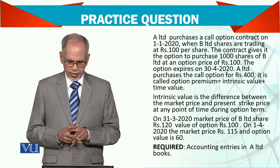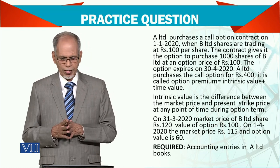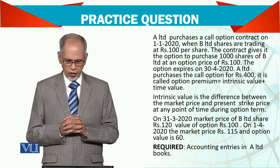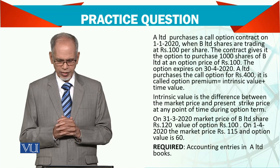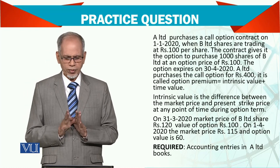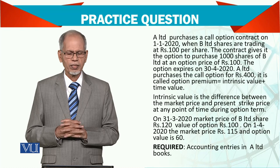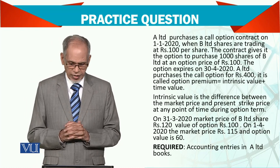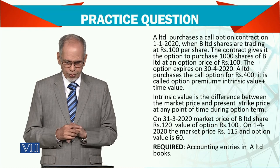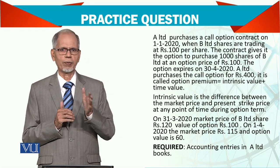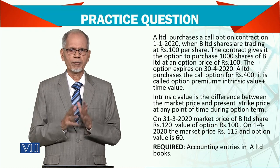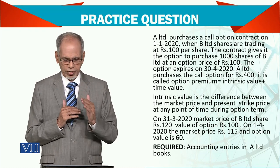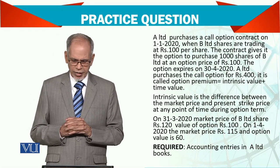On the 1st April, the market price goes to Rs. 115. You have to pay Rs. 15 rupees intrinsic value, and the option value is 60. The option which was 400 — note the correct point — the option is now just 100. So this is a value reduction of Rs. 300. The cost of your option is Rs. 300, compared to the market price.